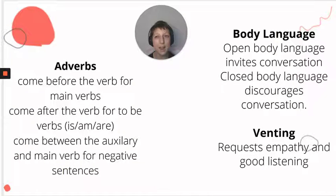Then we talked about adverbs, how they come before the main verb and after the verb for words like is, am, and are. They come between the auxiliary and the main verb for negative sentences.